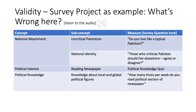Validity is all about making sure that the measure corresponds with the underlying concept. As you can see, oftentimes we also try to create sub-concepts for concepts in order to make them more precise. In this case, uncritical patriotism and national identity are two sub-concepts of national attachment.